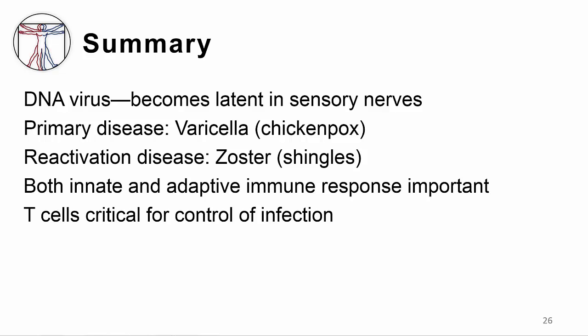In summary, VZV is a DNA virus that causes two distinct clinical syndromes: varicella or chickenpox and zoster or shingles. It becomes latent in sensory nerves, illustrating a key aspect of the alpha herpes viruses. Both the innate and adaptive immune systems are important for control of infection. NK cells and interferon alpha are key components of the innate immune response. VZV-specific T cells develop during secondary viremia, where they control primary infection and prevent reactivation of latent virus.